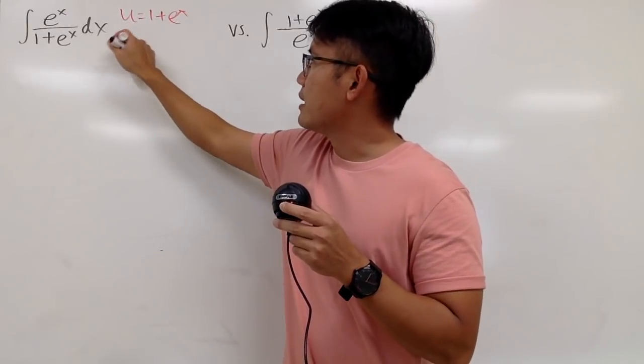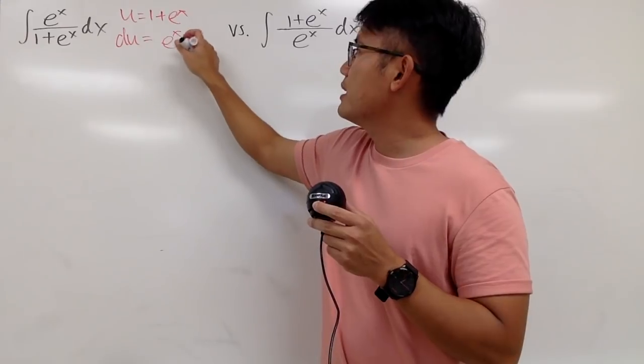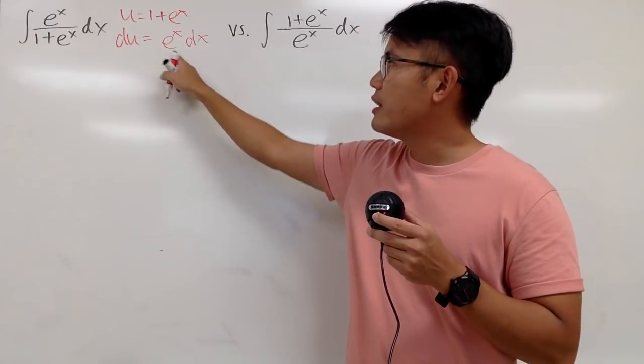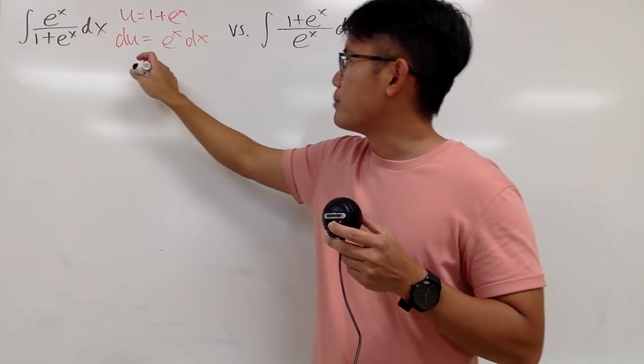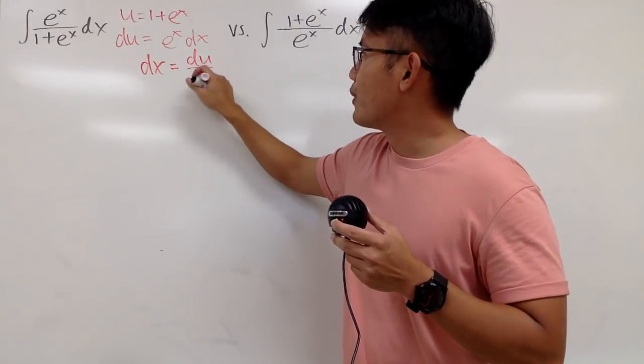Anyway, differentiate both sides, I get du equals to e^x dx. And to show you guys the cancellation, let me just isolate the dx by dividing e^x on both sides. I get dx equals to du over e^x.